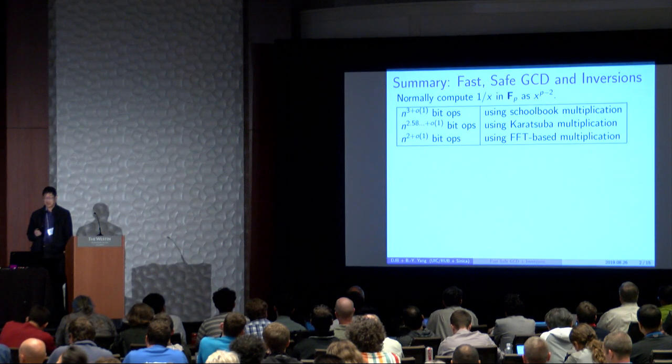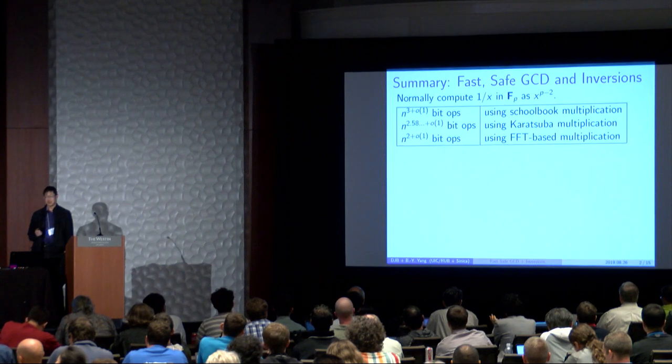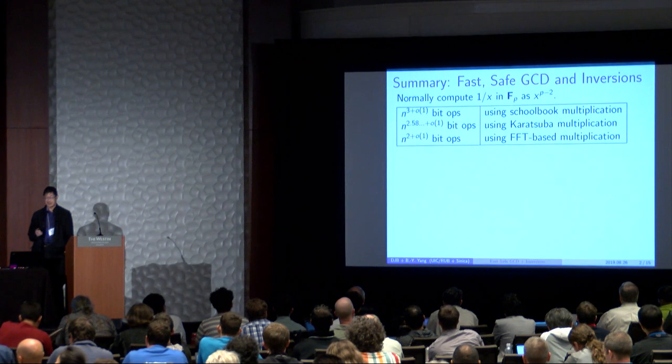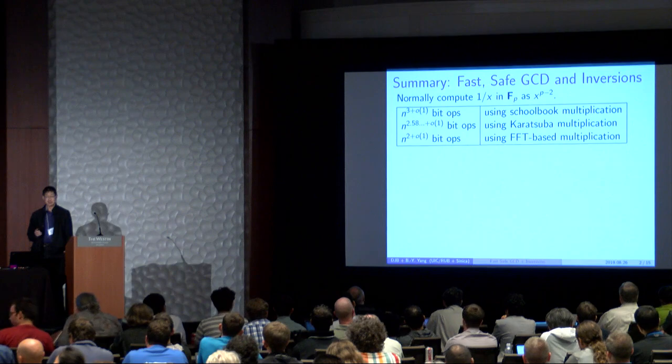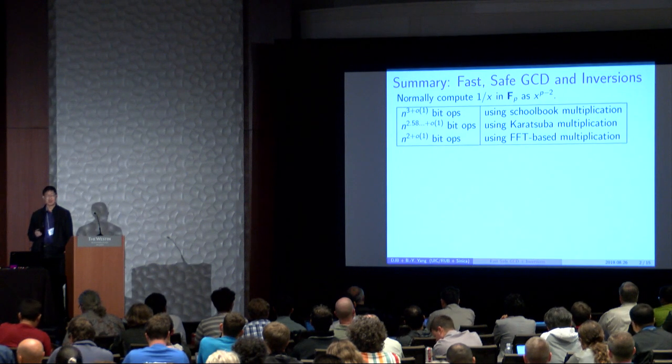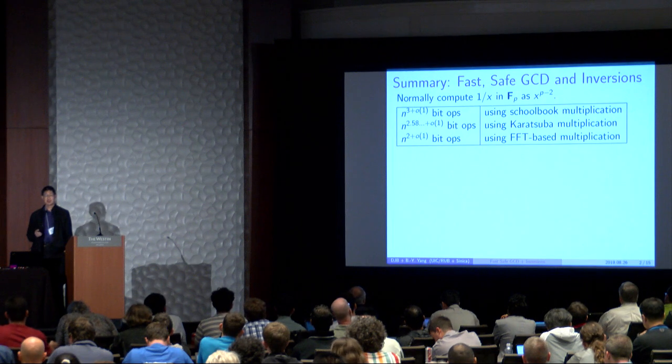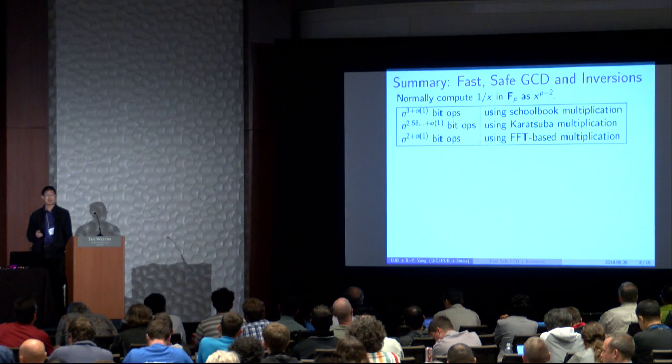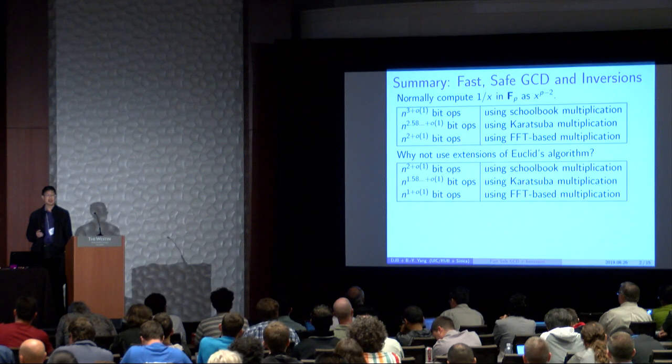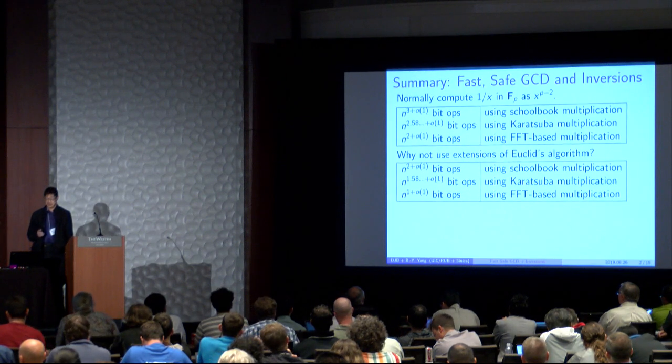And something like n to the 2.6 using Karatsuba and n squared, mostly n squared, if you are using FFT-based multiplications. So the next question is, why are we not using extended Euclidean algorithm, which is roughly a factor of n faster?